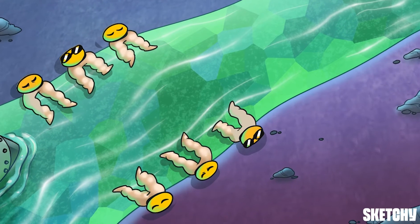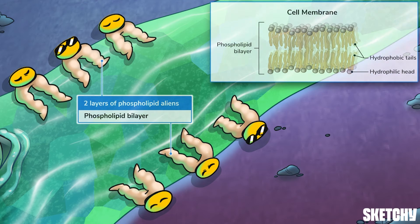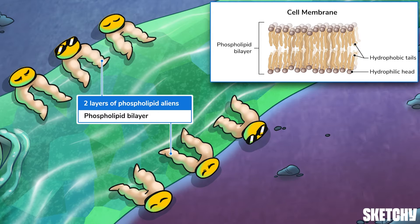These two layers of sunbathing phospholipid aliens represent the phospholipid bilayer, the two-layer barrier that separates inside the cell from outside. Phospholipids are amphipathic molecules, meaning they have both hydrophilic and hydrophobic regions. Their heads are hydrophilic, so they gather in the aqueous environment inside and outside the cell. This leads the hydrophobic tails to form the two layers of the inside of the membrane because they are excluded from the aqueous environment.